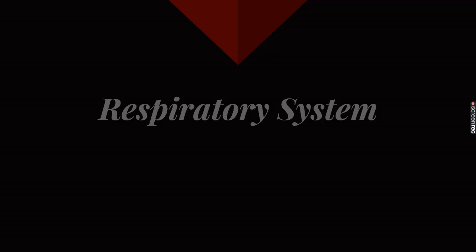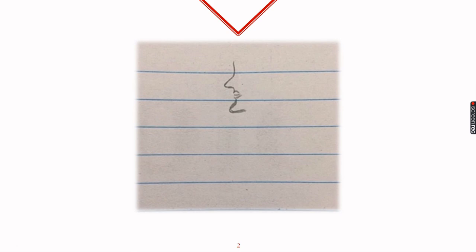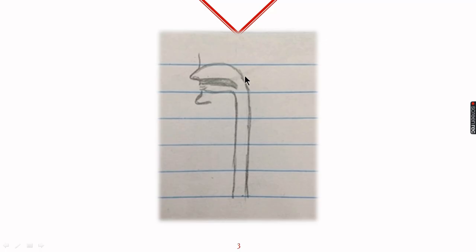First of all we will draw the outline of the face showing nose and mouth. From the nose we will draw a nasal cavity and from the mouth we will draw a buccal cavity. Both the cavities will pass through a common passage which is called as pharynx.